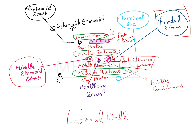The frontal sinus opening is seen in the anterior-most part of the hiatus semilunaris. The anterior ethmoid sinus opening is in the anterior part. The posterior part of the hiatus semilunaris houses the opening of the maxillary sinus — which is exactly what our question is about. So in the middle meatus, the posterior part of the hiatus semilunaris contains the maxillary sinus ostium.